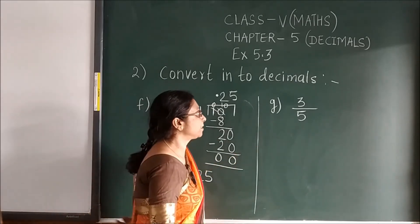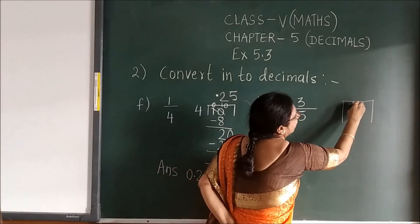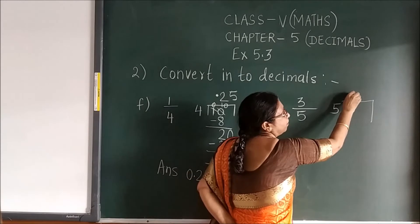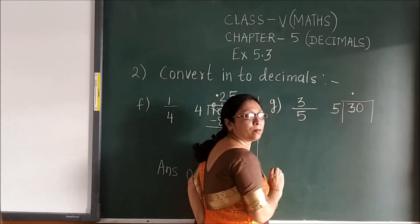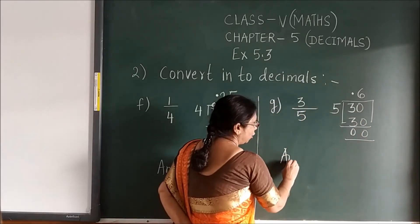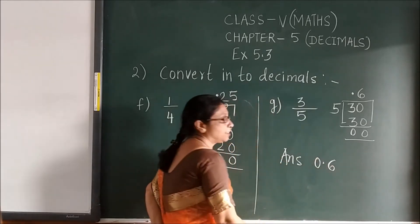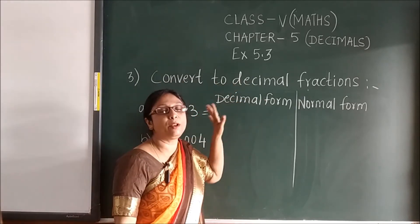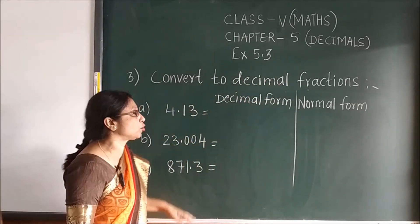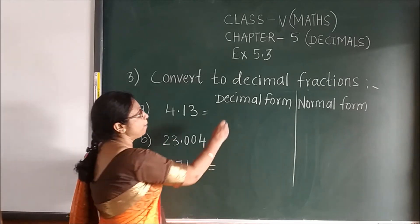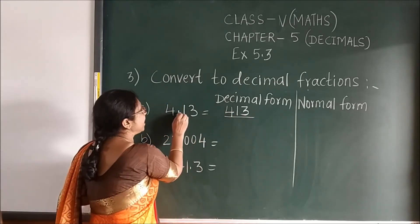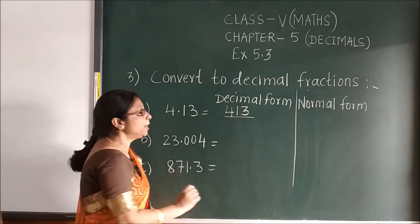Now we will see part F: 1 upon 4. Here the numerator will always go inside and the denominator will come outside. Remember this. Since 1 is less than 4, for division you will put a point and add a 0. Carry out the simple division: 4 into 20 is 5. So the decimal answer will be 0.25. Clear? Same with the next sum — divide with numerator inside and denominator outside. It is less, so add point and 0. 5 into 30 — the answer is 0.6.